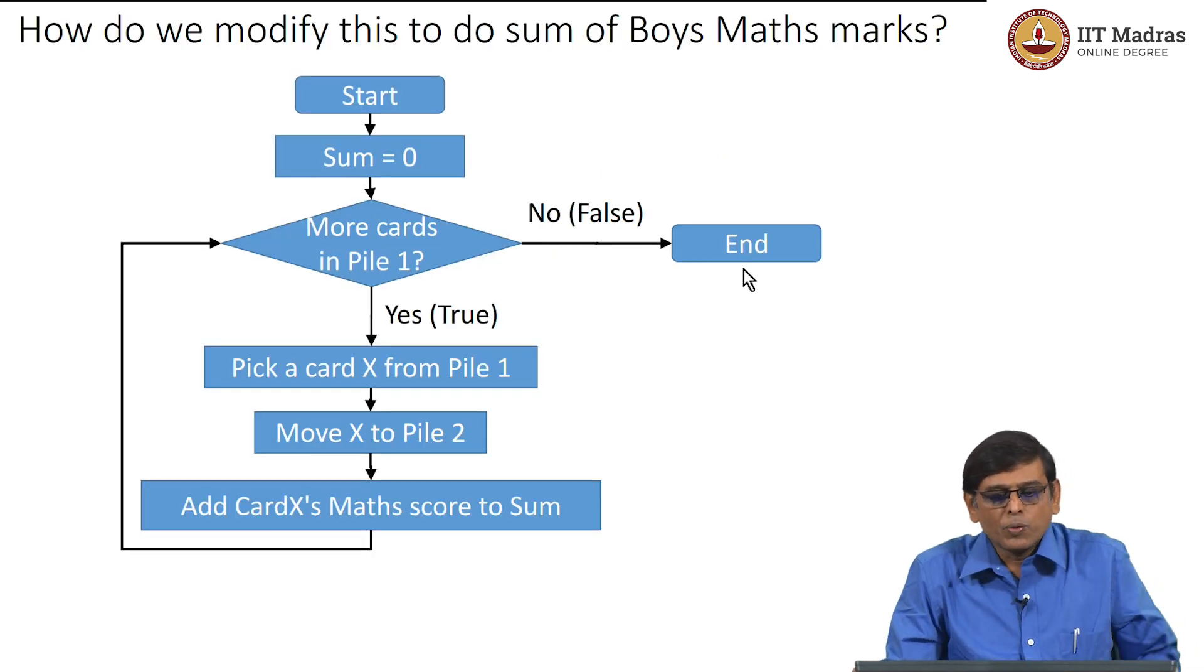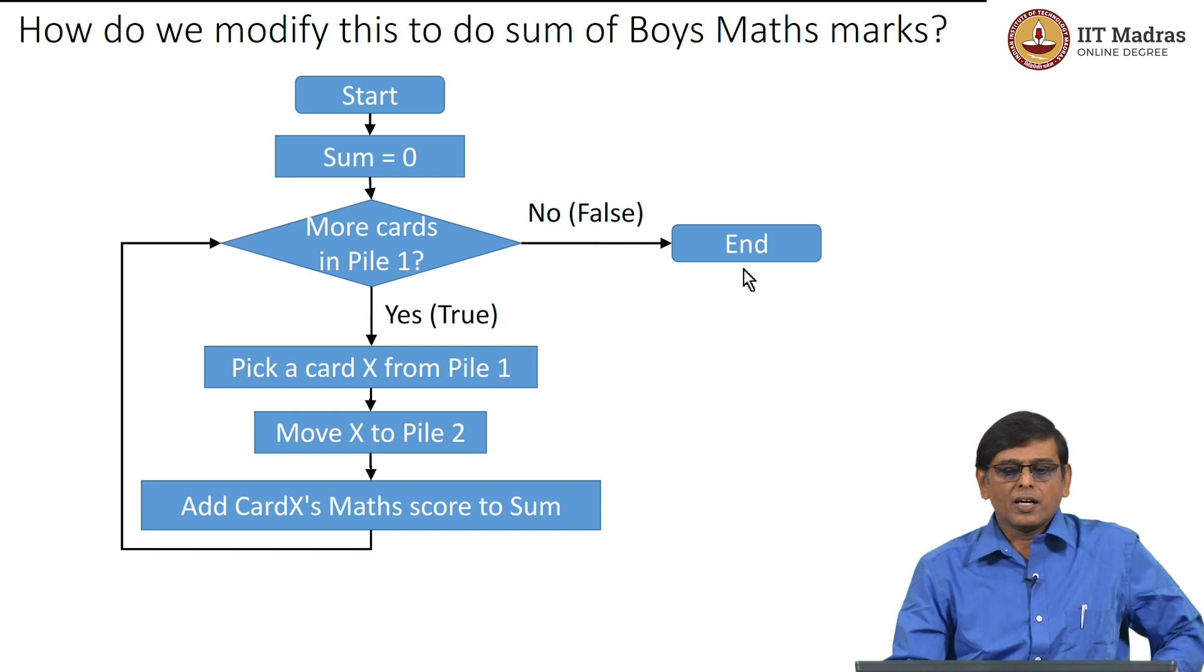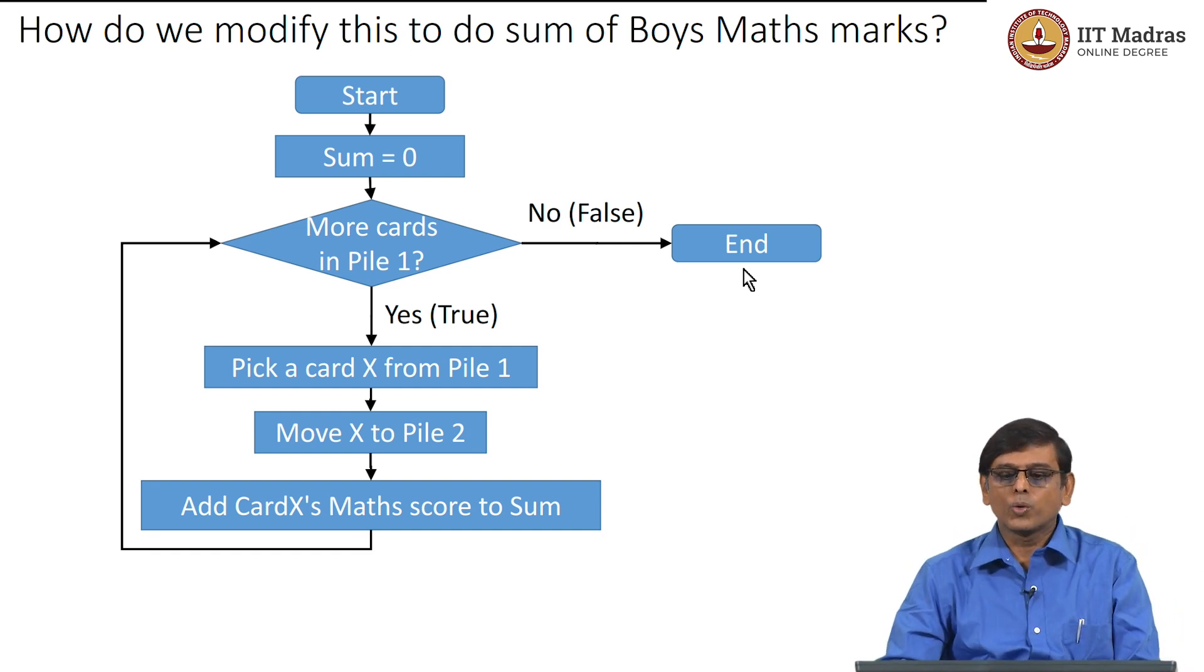For example, suppose we want to modify the flowchart for doing sum, which is shown here, to do only the sum of boys' math marks. We do not want to add up all the math marks of all the students; we want to only add up all the math marks of the boys in the class.